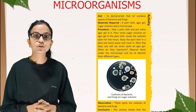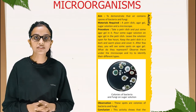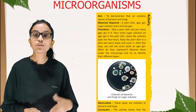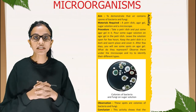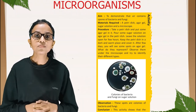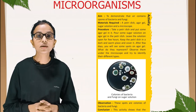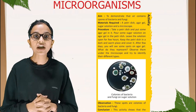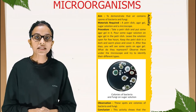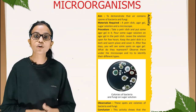Procedure: take a petri dish and put some agar gel in it. Pour some sugar solution on the agar gel. Leave the solution open for a few hours, then keep the petri dish in a dark and warm place and cover it. After a few days, you will see some spots on the agar gel. Observe them under the microscope and try to identify their different types. This picture shows colonies of bacteria and fungi on sugar solution.